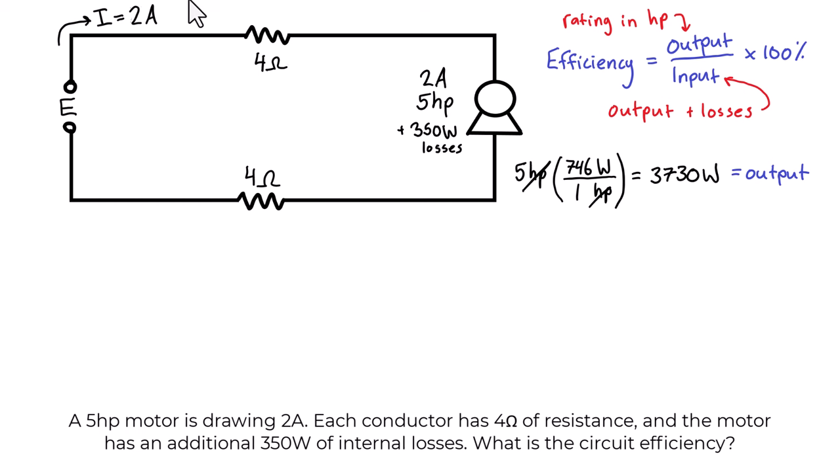So we need to take that resistance and figure out what the power loss is going to be due to the current as well. So we're going to use one of our power formulas and that's going to be P equals I squared R. And we have the current, it's two amps. So we're going to square the current and multiply it by the resistance which is four ohms. And two squared times four is equal to 16 watts. Now this is for each conductor.